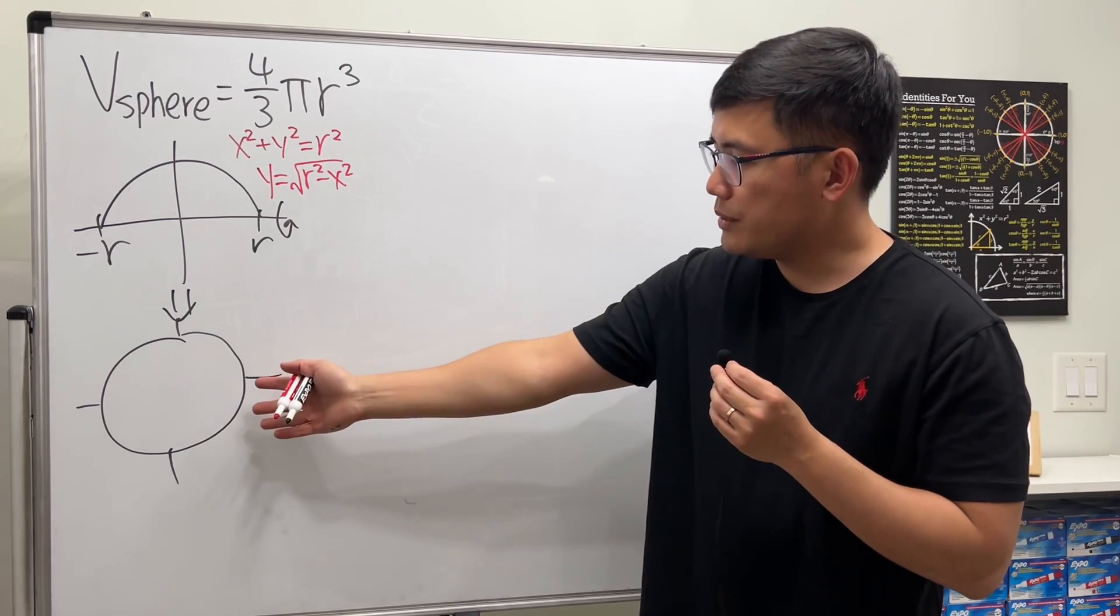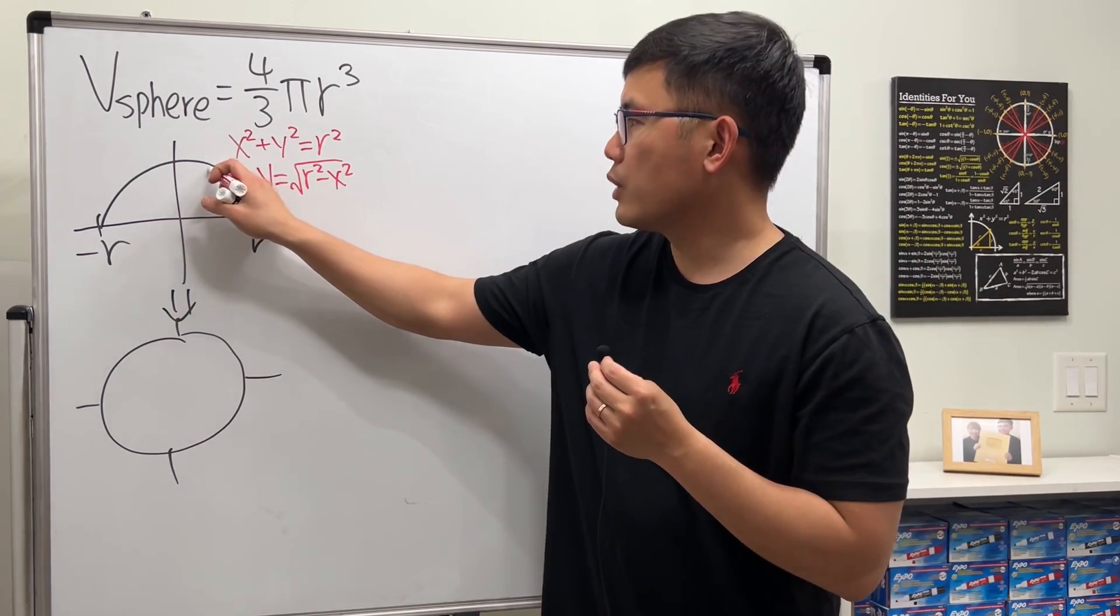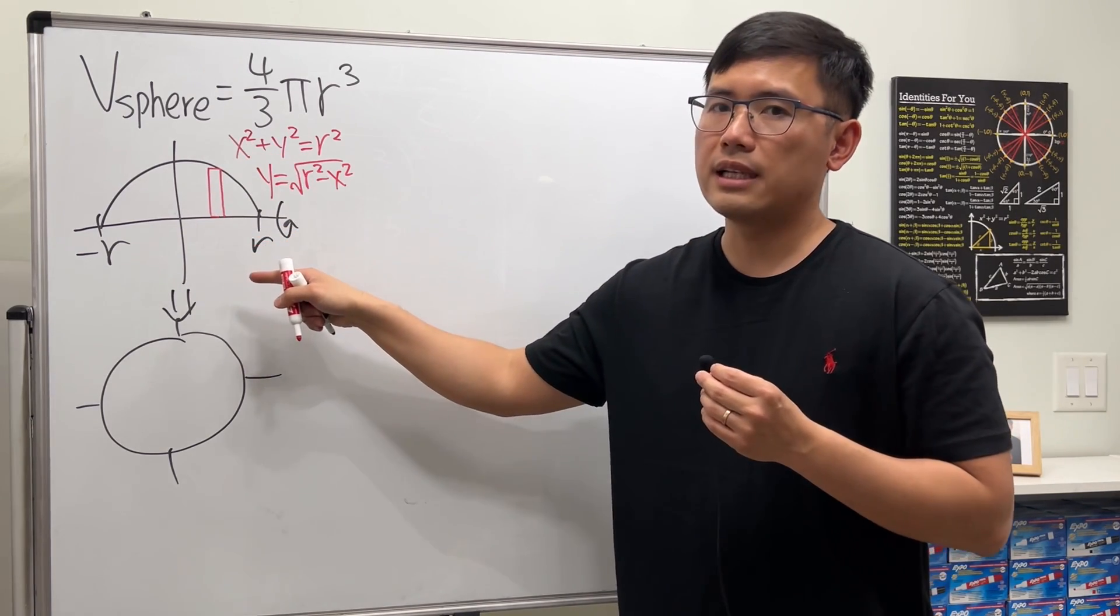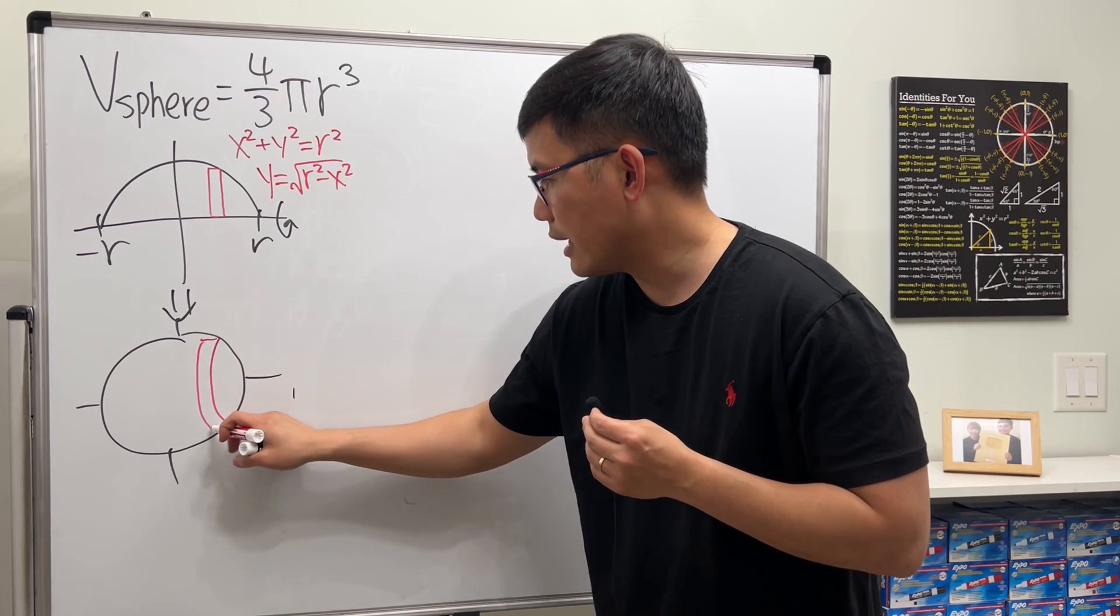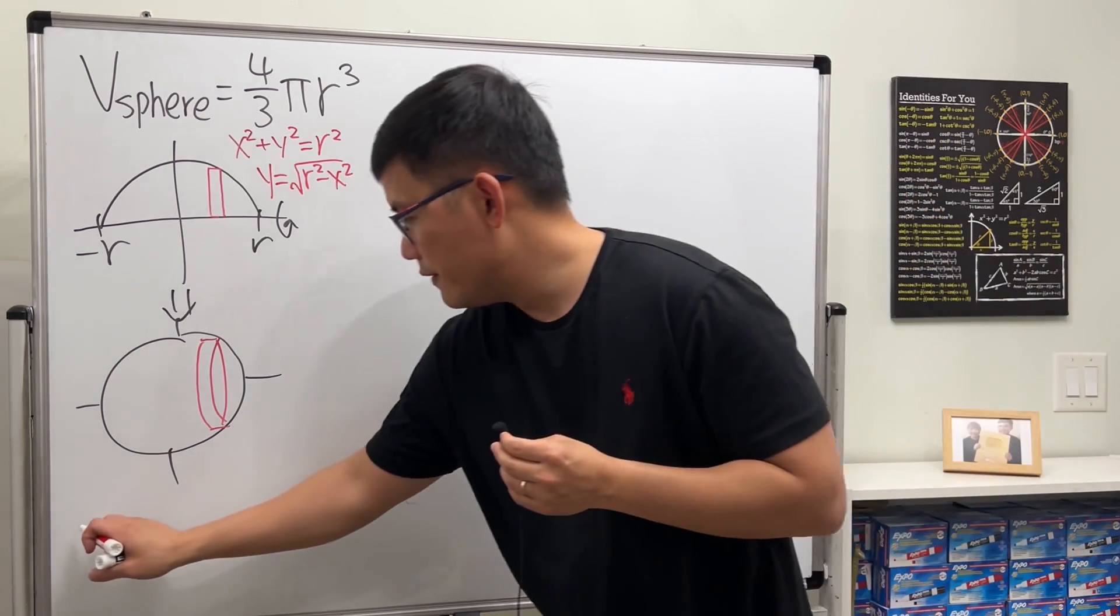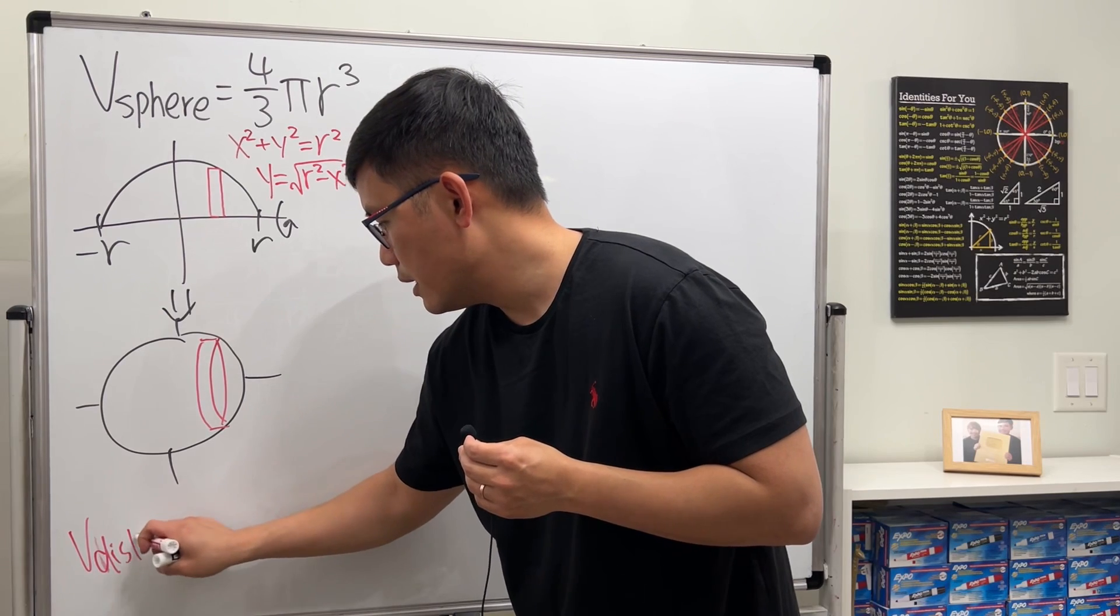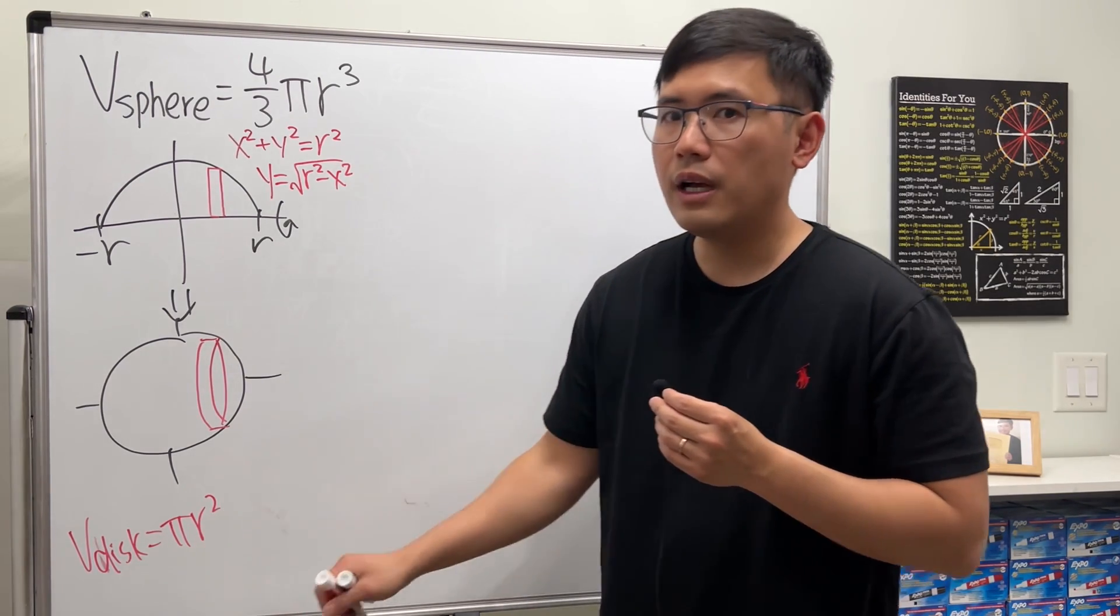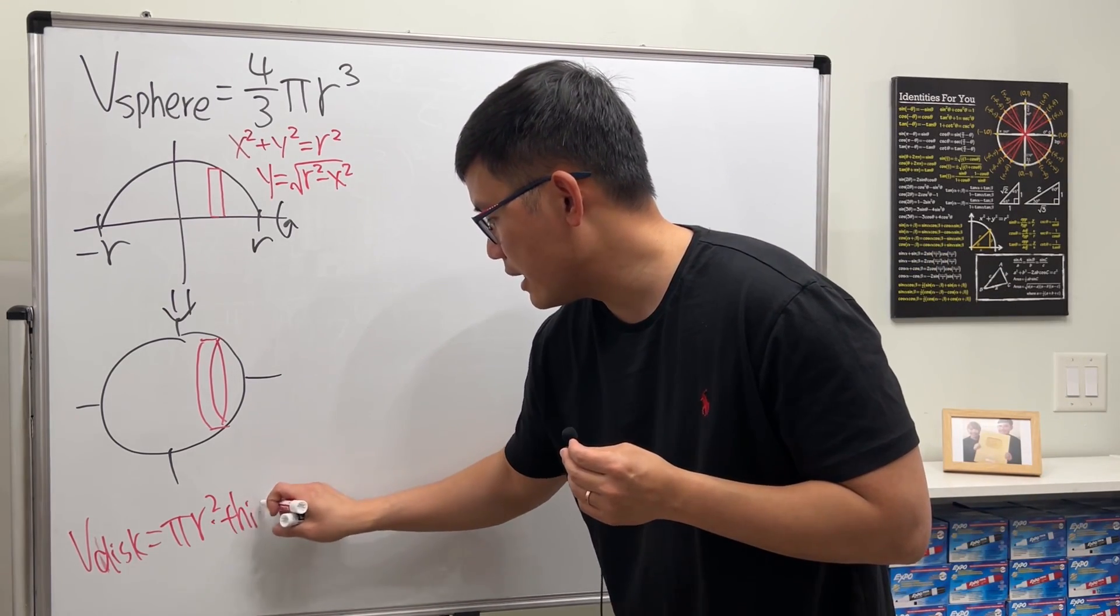Then, if you look at the 3D picture here, what we are going to do is, we start with a rectangle here, and then rotate this about the x-axis, and this is how we are going to get a disk. And remember, the volume of a disk is equal to the area of the circle, πr², times how thick the disk is. So multiply by thickness.